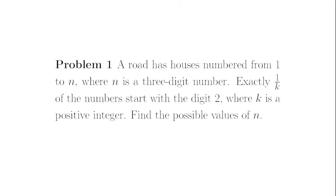Problem 1. A road has houses numbered from 1 to n, where n is a three-digit number. Exactly 1 over k of the numbers start with a digit 2, where k is a positive integer. Find the possible values of n.